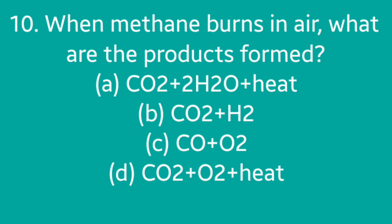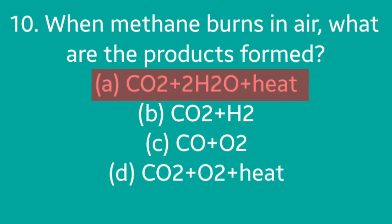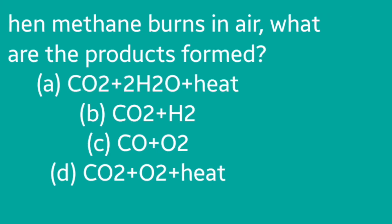Question number 10: When methane burns in air, what are the products formed? Option A: CO₂ + 2H₂O + heat. Option B: CO₂ + H₂. Option C: CO + O₂. Option D: CO₂ + O₂ + heat. Answer is option A: CO₂ + 2H₂O + heat.